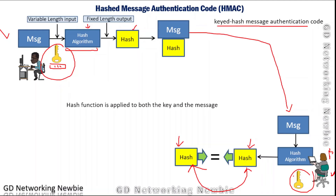In addition to that, the key ensures that the sender of the message is indeed Mr. A, because we have a copy of the key used by Mr. A. If any other key is used, the hash values will not match. If there is any other person who also receives that message, that user will not have the key which these two users are sharing with each other, so they cannot produce a matching hash.